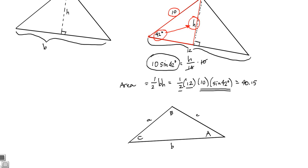We said it was 1/2, 1/2 times the product of the two sides that are around that 42 degree angle. See that? The 10 and the 12 are the two sides around that 42 degree angle times the sine of the angle. So I could write three different formulas for this triangle.